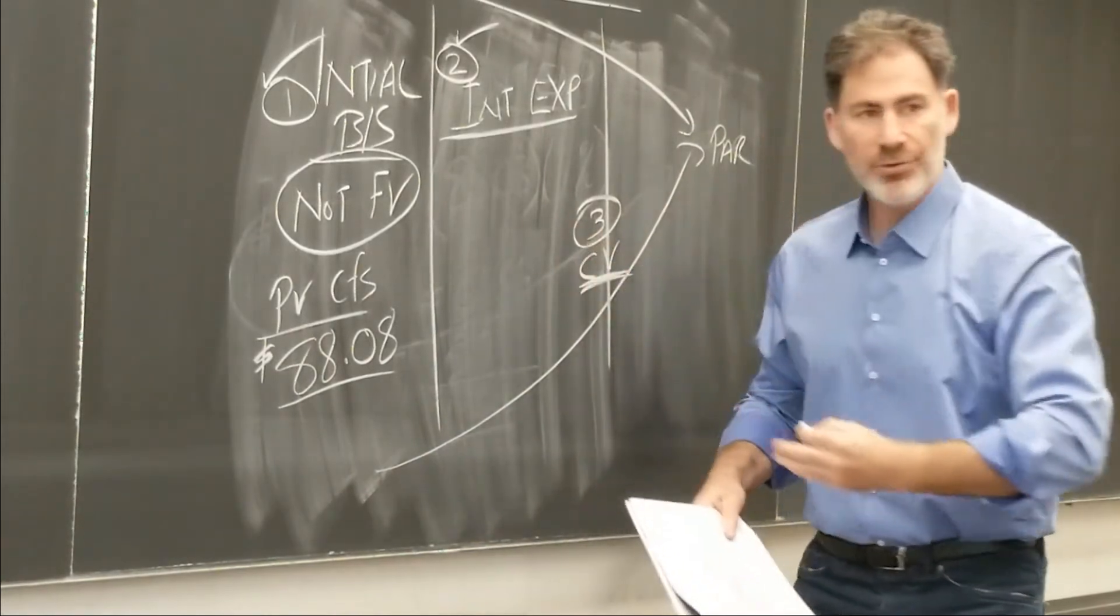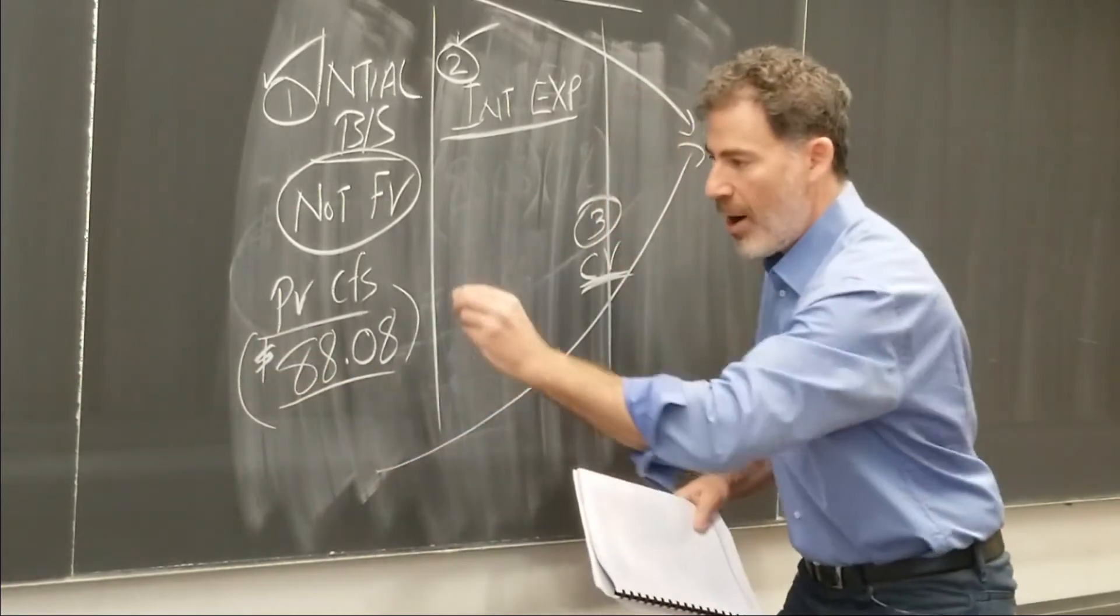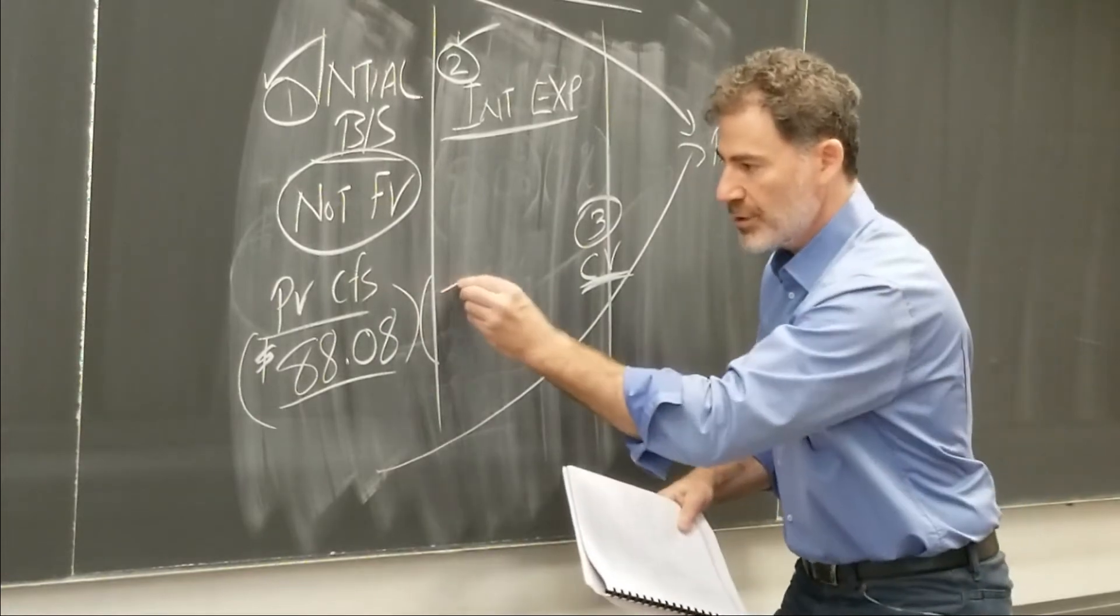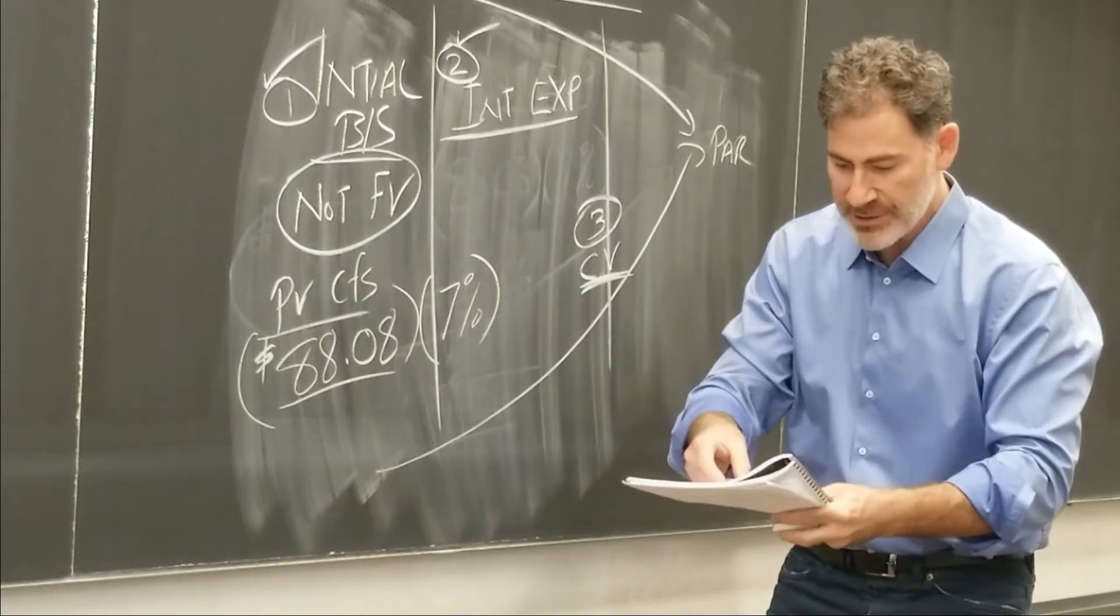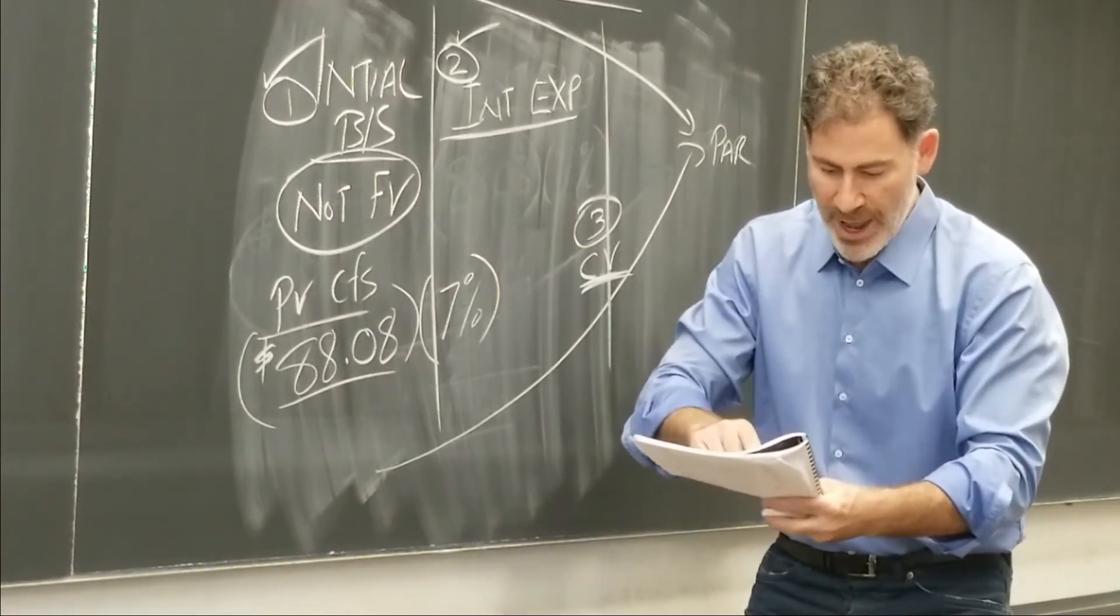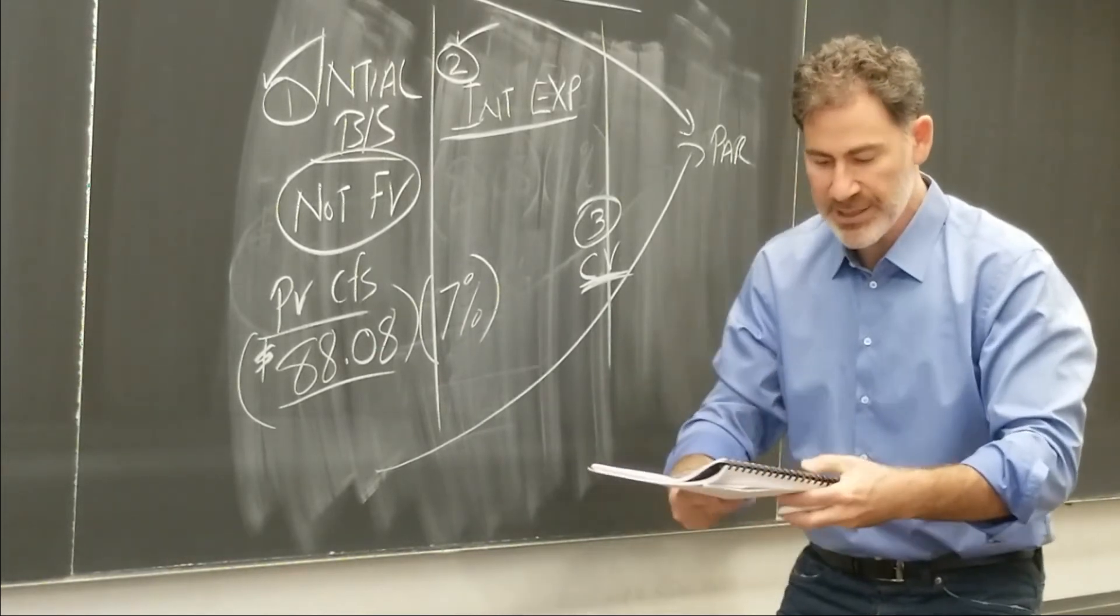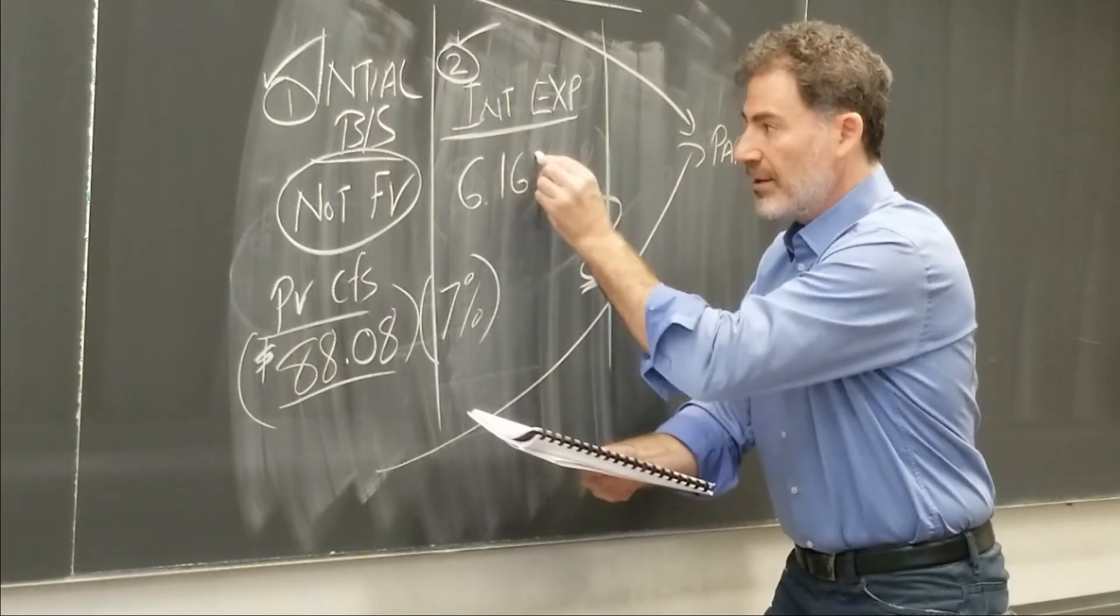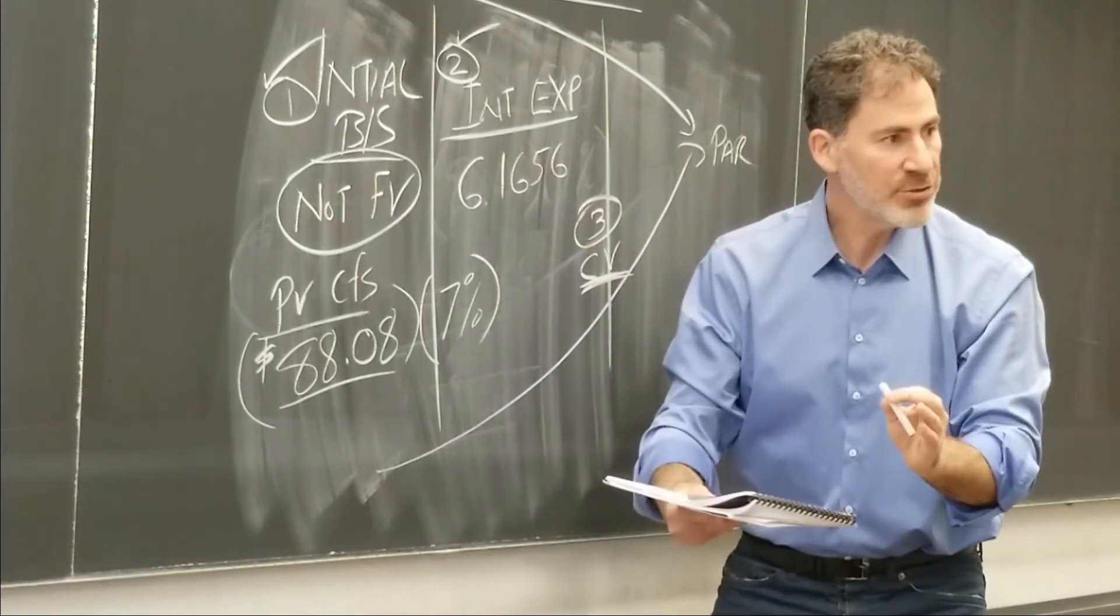Now, to get the interest expense, we'll take that initial liability, and we will multiply it by the rate that was in effect when the bonds were issued. That's the 7%. So now, if we do this math, let's calculate the interest expense. 88.08 times 7%. So this is 6 and 16.56. So we've got the interest expense.